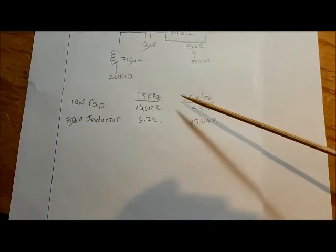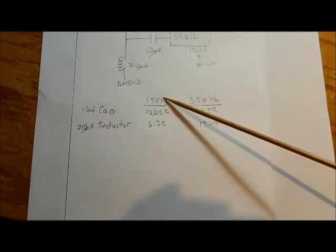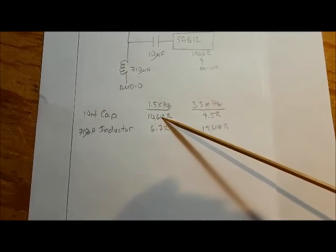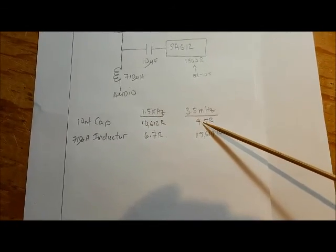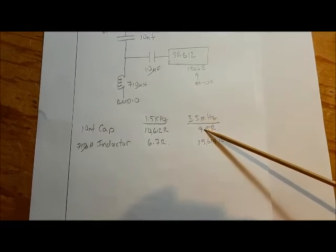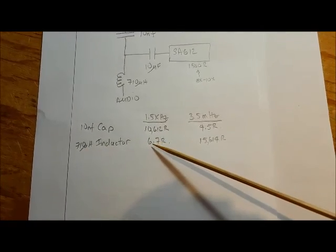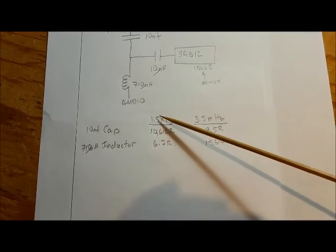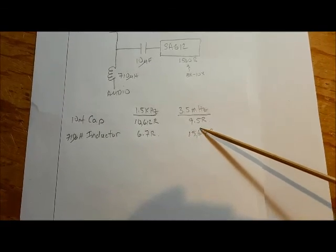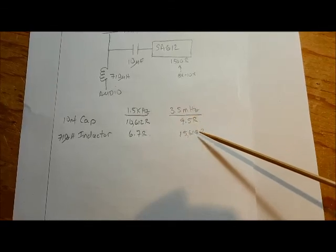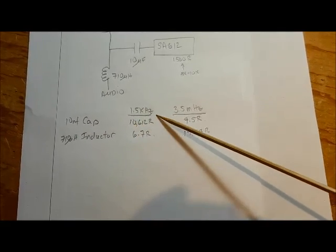In the case of the 10 nanofarad capacitor at audio frequency, it's going to present about 10.6 kilo ohms of impedance to the audio. But it's going to present only about 4 ohms of impedance to the 3.5 megahertz RF signal. Similarly, the inductor is going to present about 7 ohms of impedance to the audio signal, but it's going to present over 15,000 ohms to the RF signal. So it would choke off RF, and the capacitor would choke off audio.